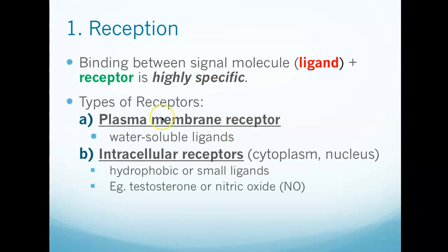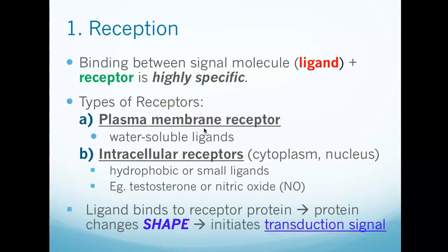You have two types of receptors: plasma membrane receptors that are embedded in the membrane, and intracellular receptors that are inside the cell. If you have a hydrophobic hormone like a steroid hormone — like testosterone or estrogen — it does not need a plasma membrane receptor. It just goes right in, so its receptor would be inside the cell. But water-soluble ligands, hydrophilic ligands like insulin, need a membrane receptor. The ligand binds to the receptor protein, the protein changes shape — a conformational change — and that initiates a transduction signal, kind of like a domino effect.